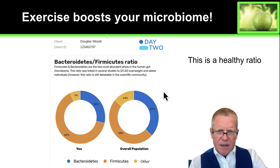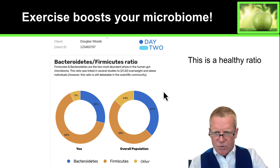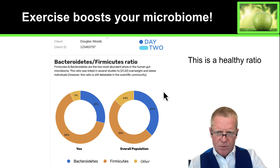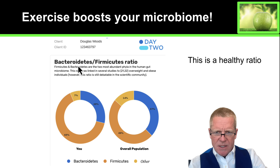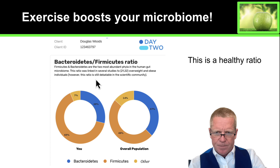So let's dive into the specifics of what Day Two saw with my microbiome. First of all, they look at a ratio of Bacteroidetes to Firmicutes, looking at these two different phyla of gut bacteria.